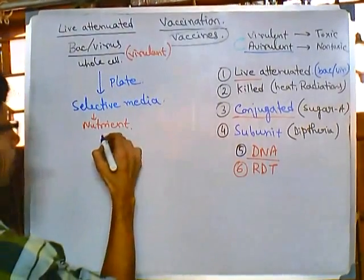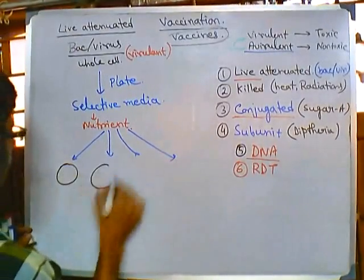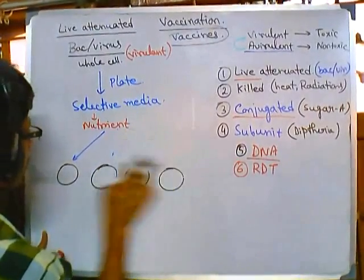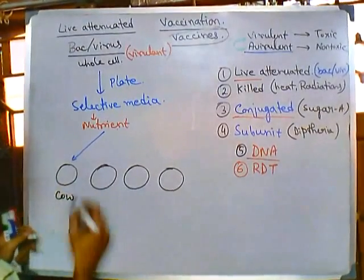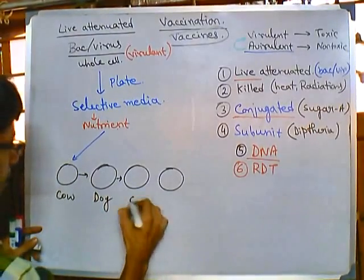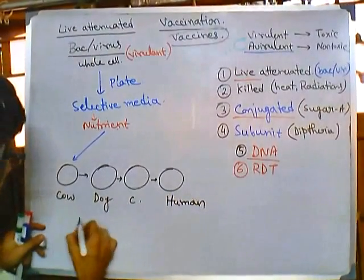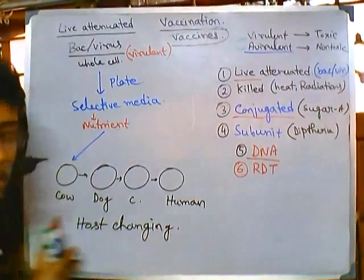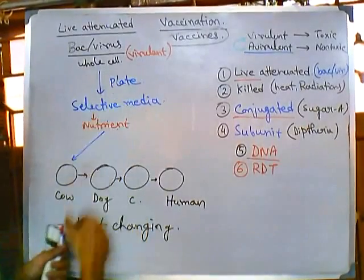Then we take the cells and put them in different hosts sequentially. We place them first in a host — say, cow — then we put it into the dog, then we change it to something else, and then finally we take it to the human. This host changing is also an important part of the process.